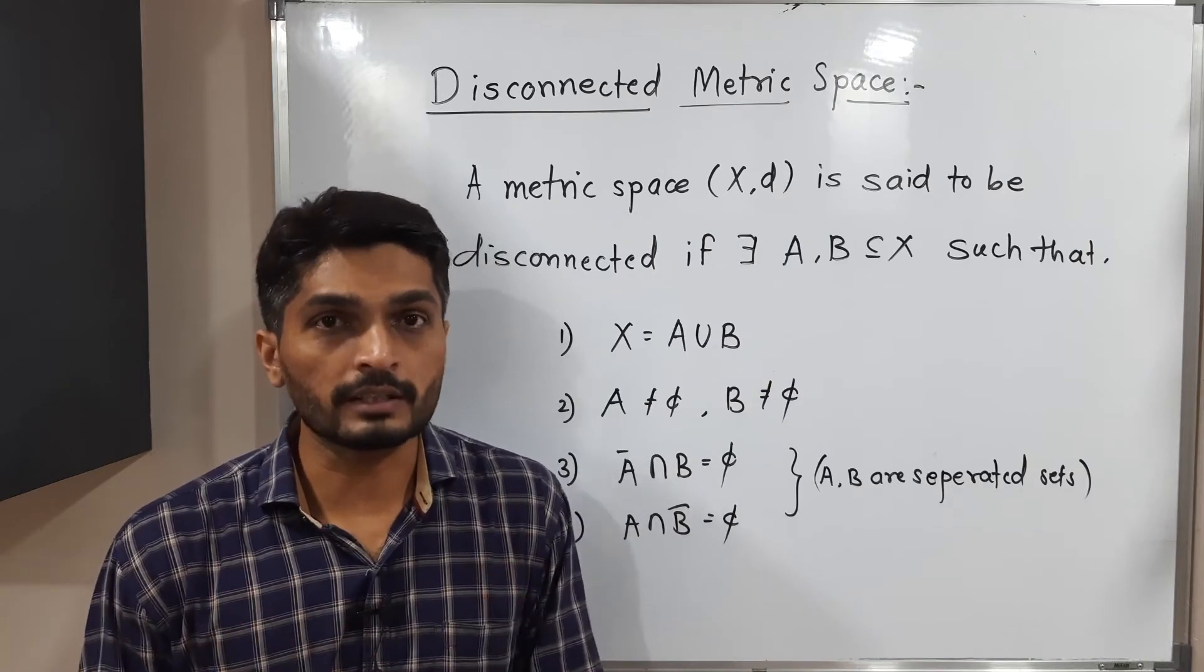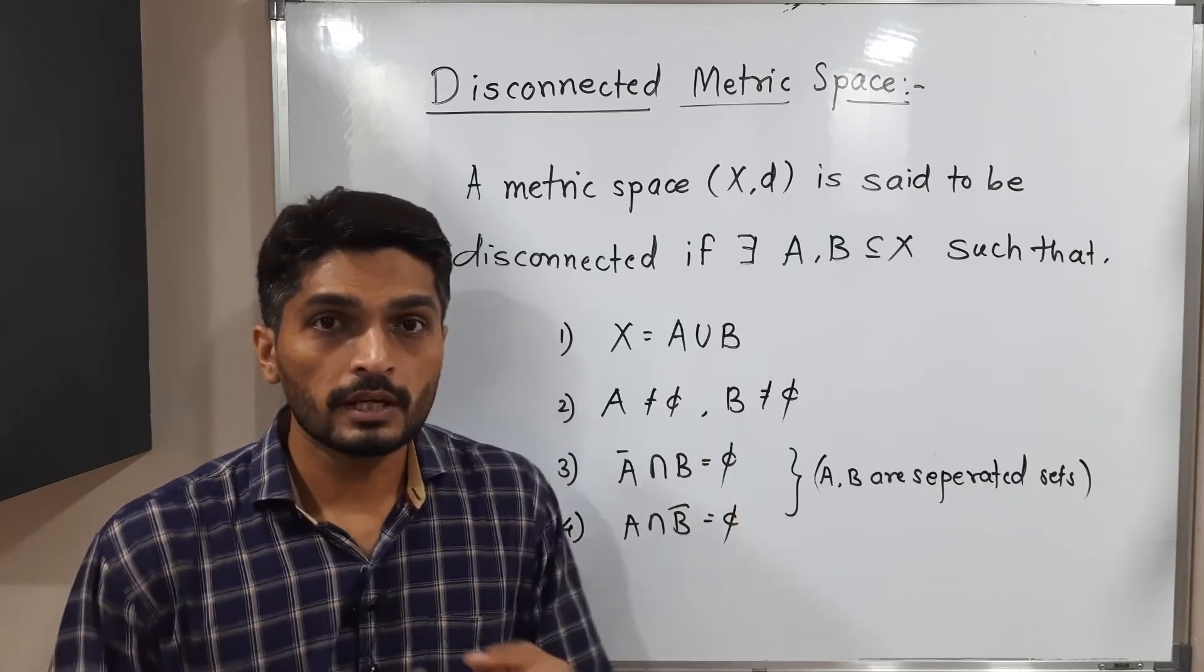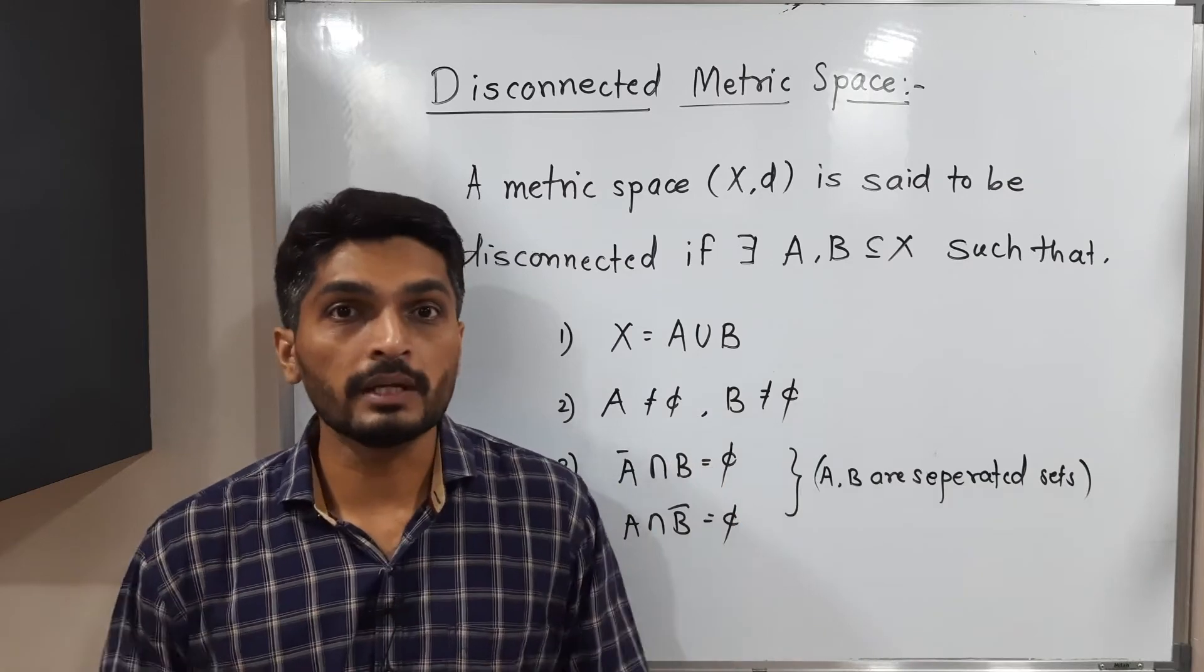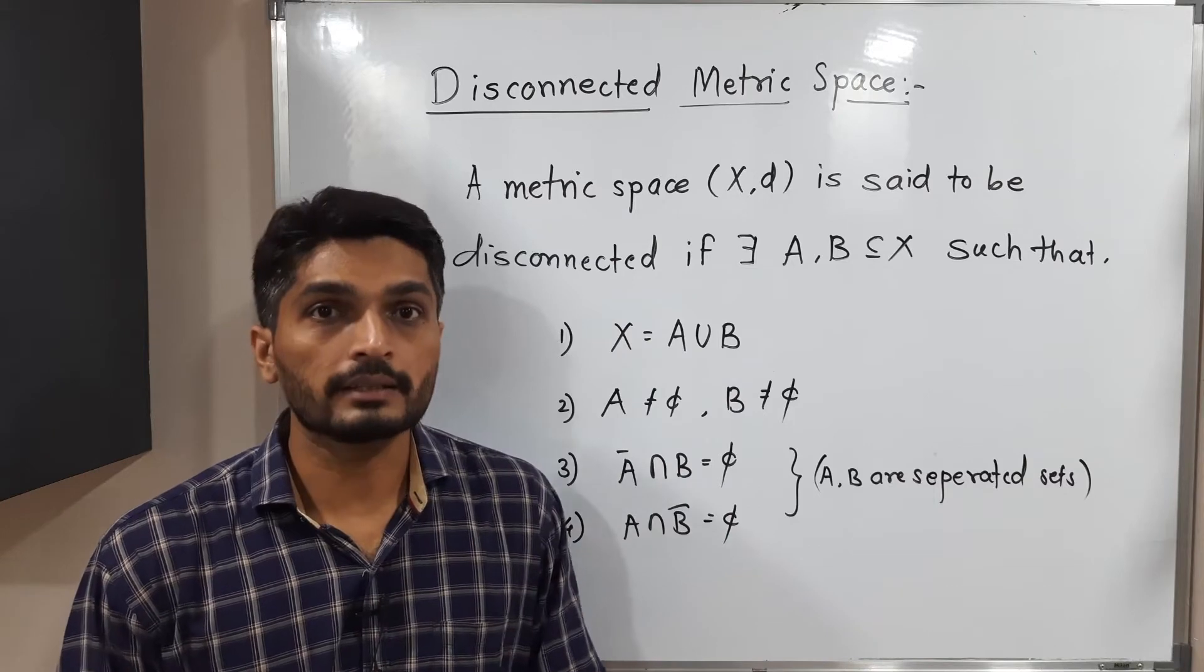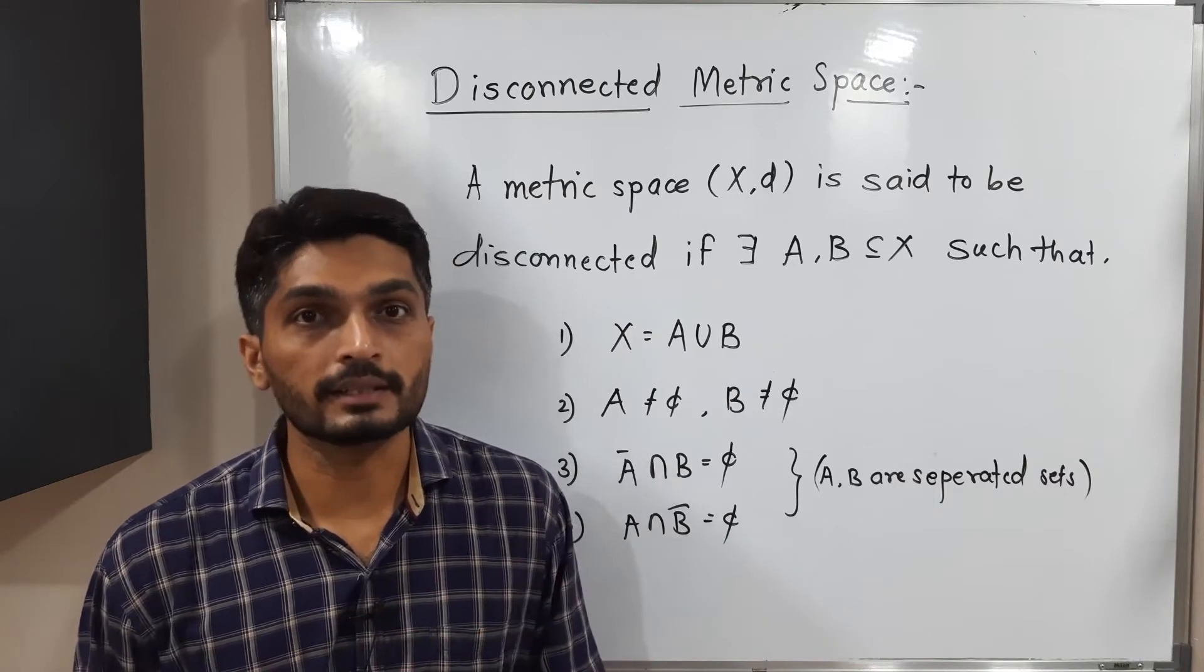So let us recall what are the three conditions or what are the four conditions? Their union should be X, the sets should be non-empty, and A and B should be separated sets.